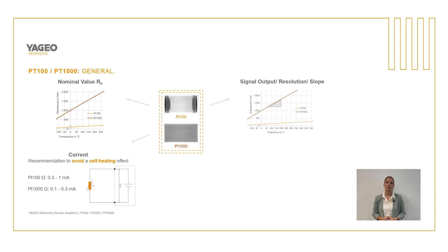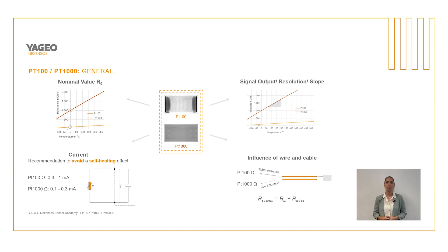The PT1000 also has a steeper characteristic curve, which has a positive effect on the resolution of the measurement signal. Furthermore, the resistance of the connected cable has a greater effect on the PT100, and what this means exactly will be shown on the next slides.